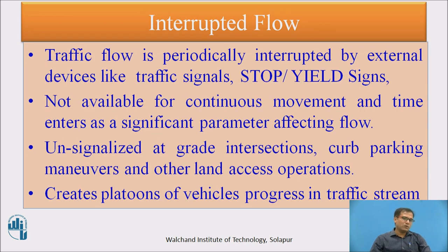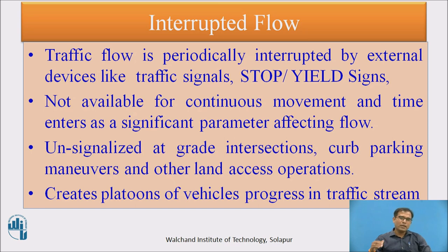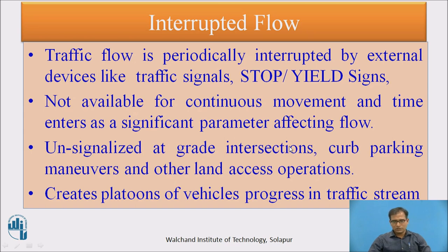Interrupted flow is the opposite of uninterrupted flow. Here, you receive external interruptions such as traffic signals and stop or yield signs at intersections. It is not available for continuous movement, and time enters as a significant parameter affecting the flow, because vehicles are stopping and starting. This occurs at unsignalized grid intersections where you wait for an opportunity to cross, and also where there is curb parking — vehicles parked on the road, parking and un-parking — all creating interruptions to traffic movement.